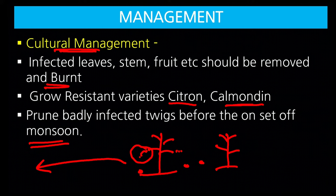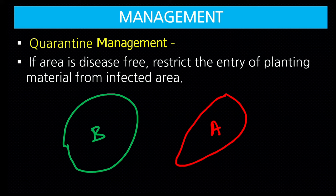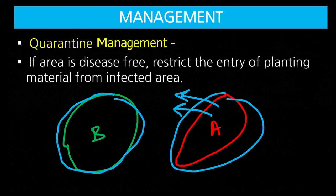Quarantine management: if infection is very high in one state or district, and another district has no infection, the government should make rules that planting material should not be exported from infected districts or states. Any planting material imported into healthy districts or states must be completely healthy — so that the disease does not spread out from the infected area and does not enter healthy areas. This is called quarantine management.